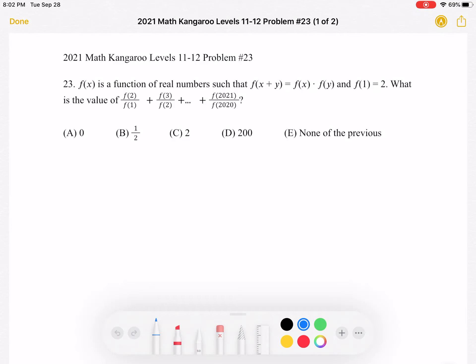f(x) is a function of real numbers such that f(x + y) equals f(x) times f(y), and f(1) equals 2.